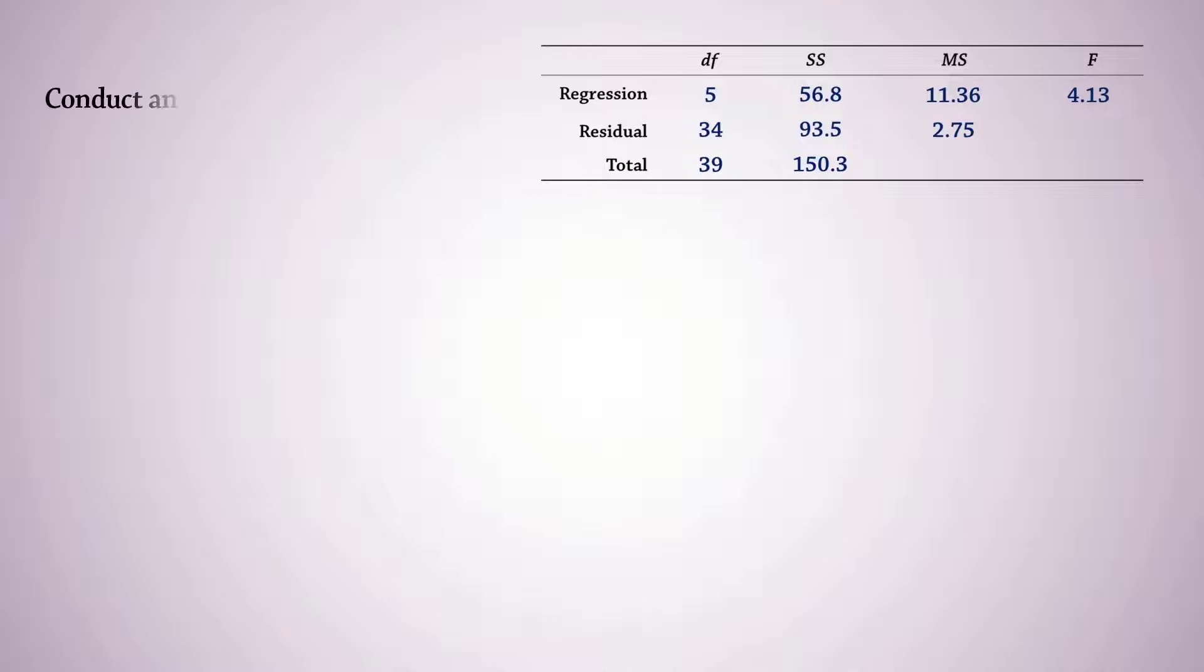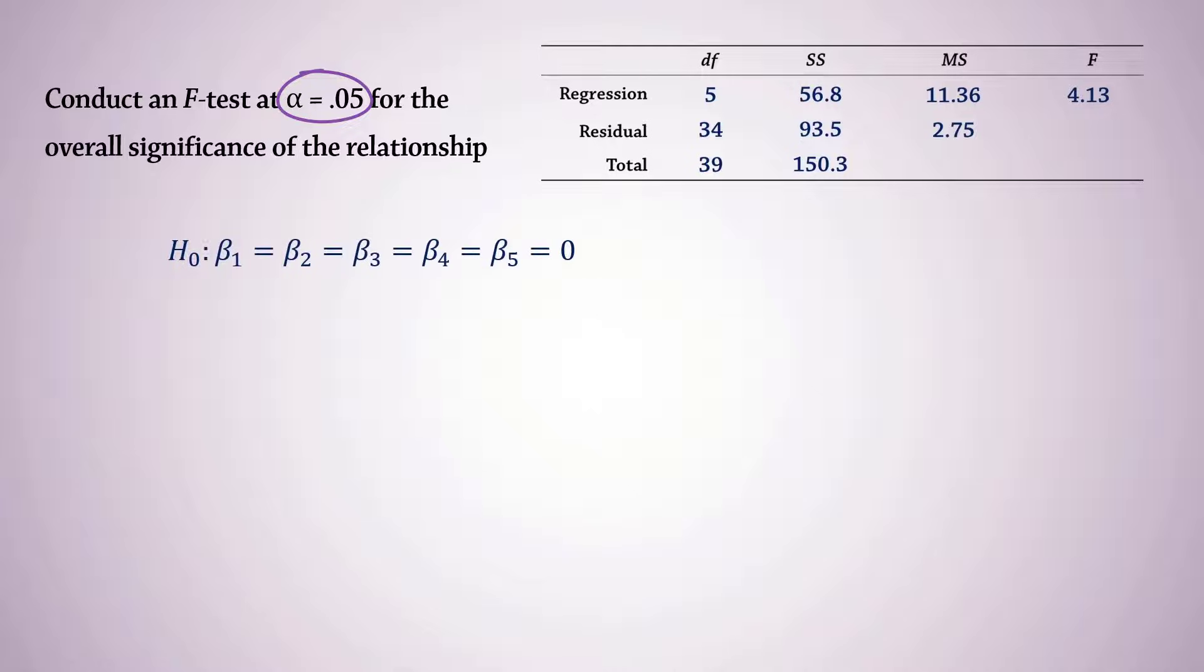Finally, we conduct an overall significance test for the model at alpha equals 0.05. The null hypothesis for the test is that the regression coefficients of the 5 independent variables are all 0. That is, there is no significant relationship between the dependent variable and any of the independent variables. The alternative hypothesis would be that at least one of the coefficients is not 0.